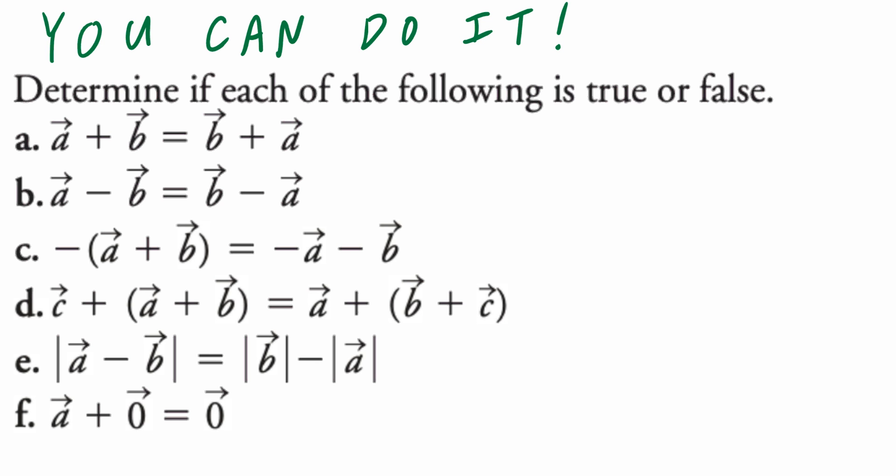Hi everyone, let's take a look at the following example: determine if each of the following is true or false. Before we start with part A, we have to define vectors A and B. We're going to make the assumption that A and B are two different vectors — vector A and vector B are not equal vectors.